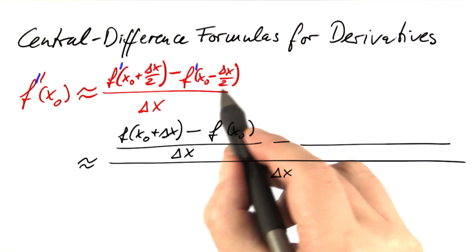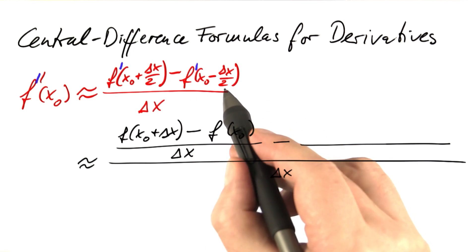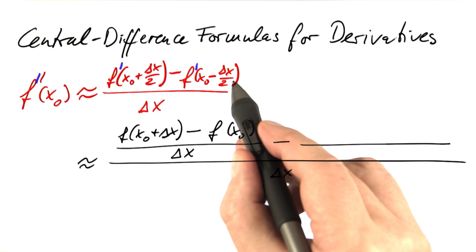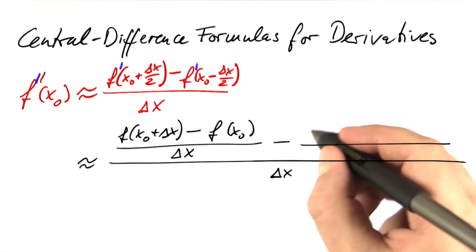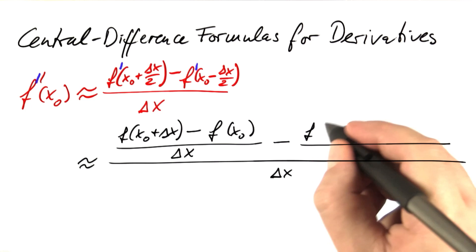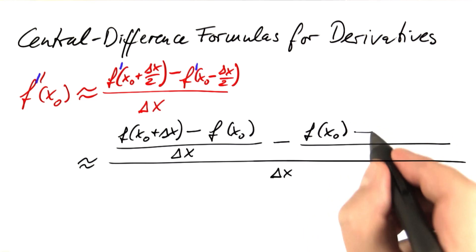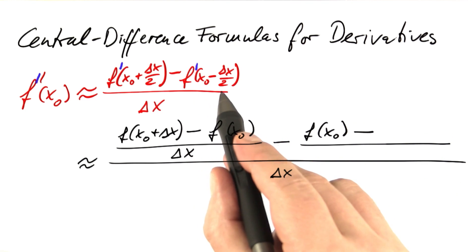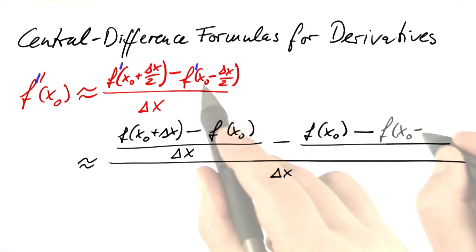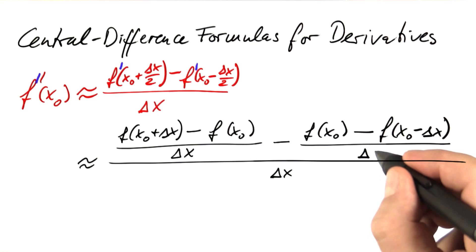And now for this derivative. We're moving by delta x half to the right, minus delta x half plus the same cancels, so this becomes f of x0 minus, now we have to move by delta x half to the left, which becomes x0 minus delta x divided by delta x.